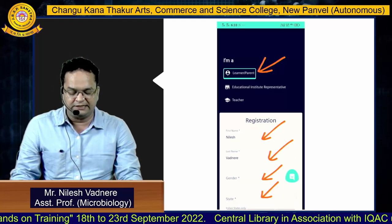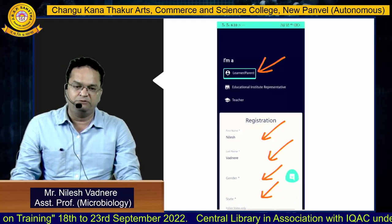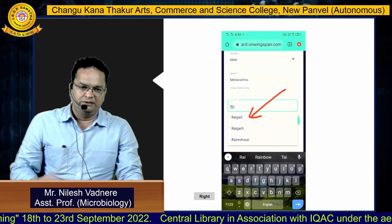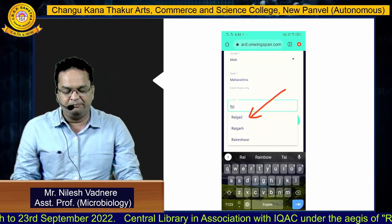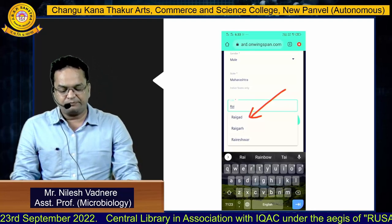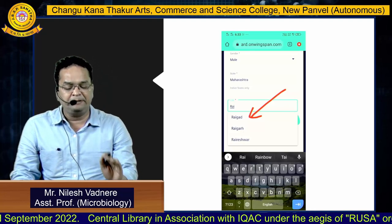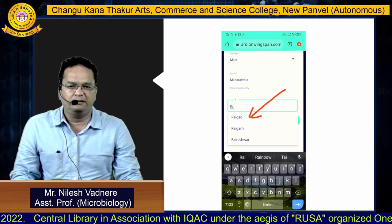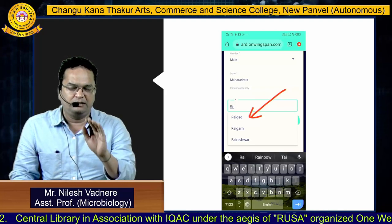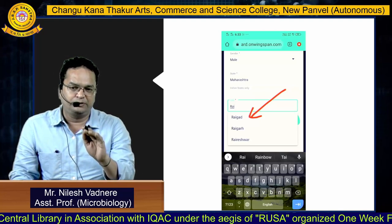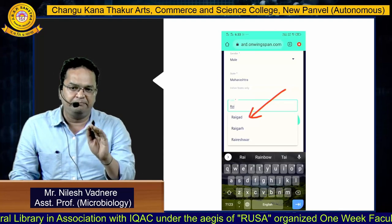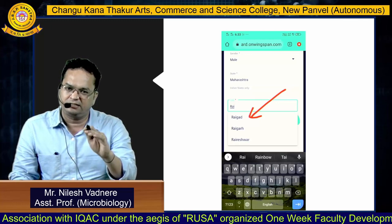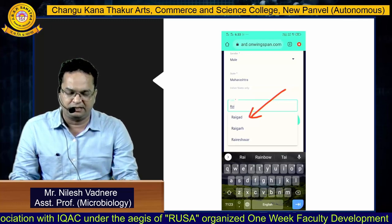Fill in information such as name, last name, gender, state, and institute name. For state, you have to enter Maharashtra — just type MAH and it will prompt Maharashtra. Select Maharashtra.